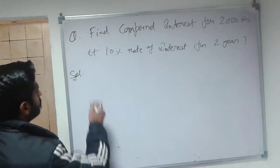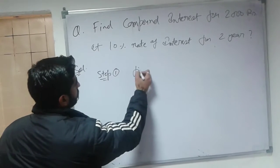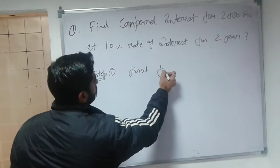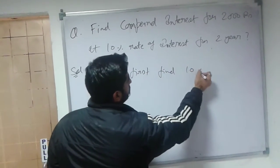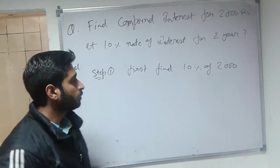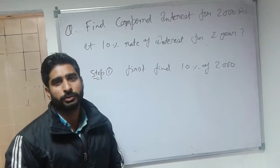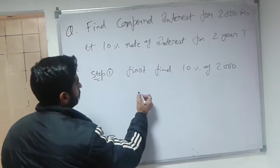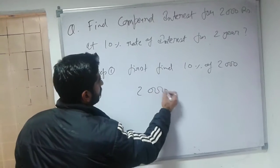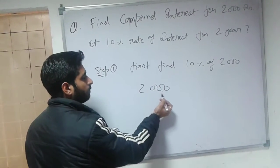So we go for step 1, first find 10% of 2000. To calculate 10% of 2000 quickly, write down 2000 and make a dot here. For 10% make a dot here,